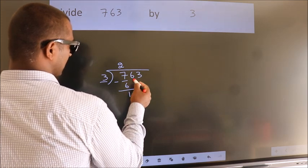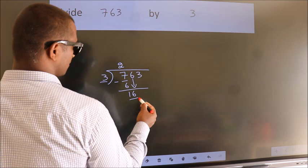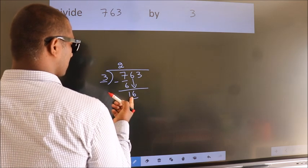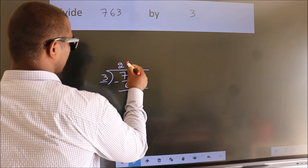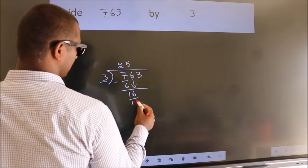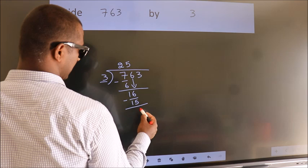After this, bring down the beside number. So, 6 down. So, 16. A number close to 16 in the 3 table is 3 times 5, which is 15. Now, we subtract. We get 1.